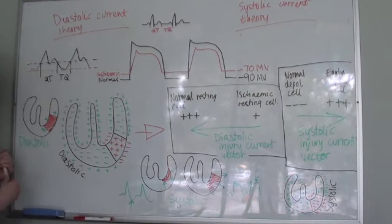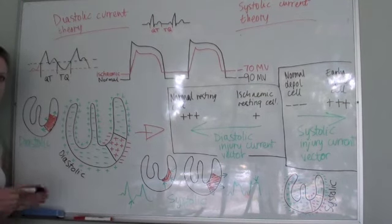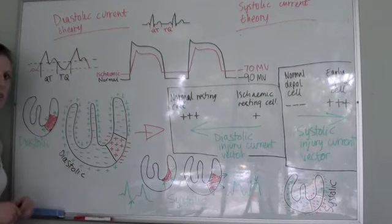So you will get a negative deflection. Now I know you're thinking that in a transmural infarct I thought we see ST elevation. That is depression.